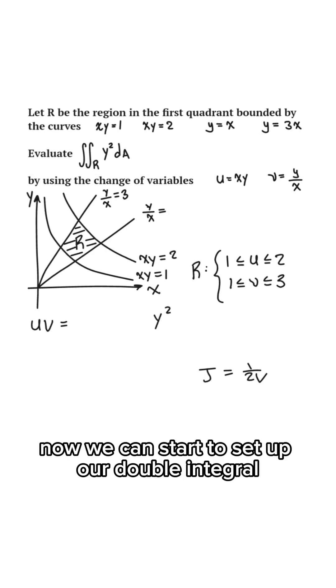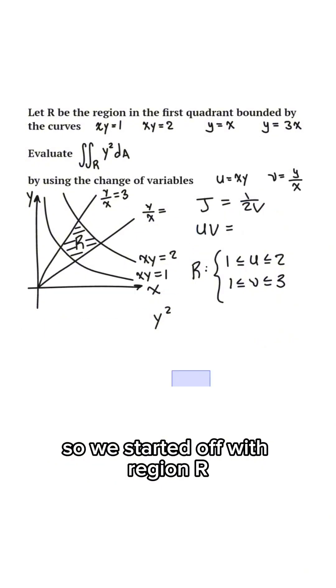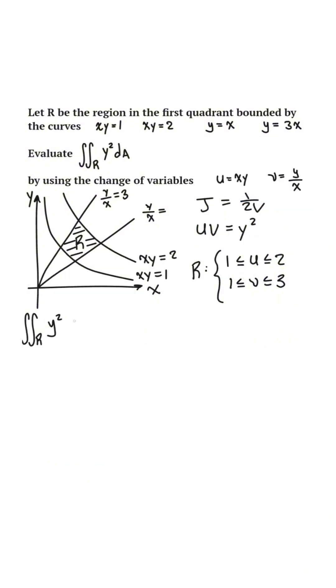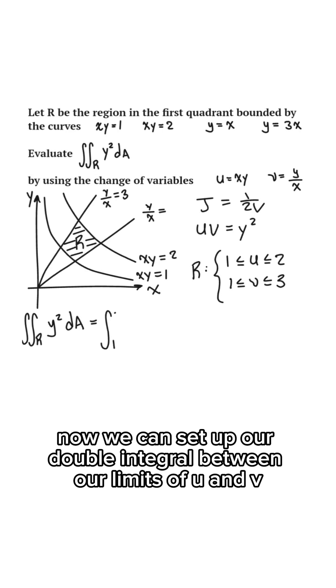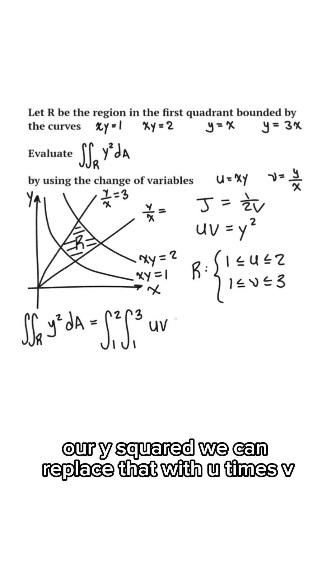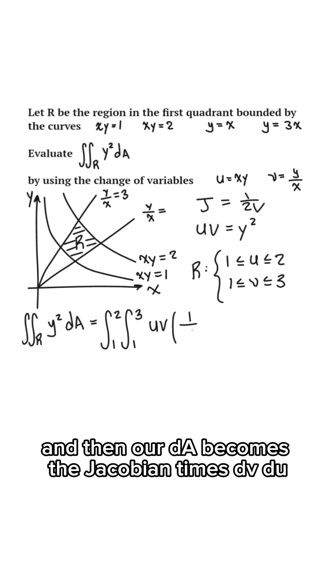Now we can start to set up our double integral. So we started off with region R y squared dA. Now we can set up our double integral between our limits of u and v. Our y squared, we can replace that with u times v, and then our dA becomes the Jacobian times dv du.